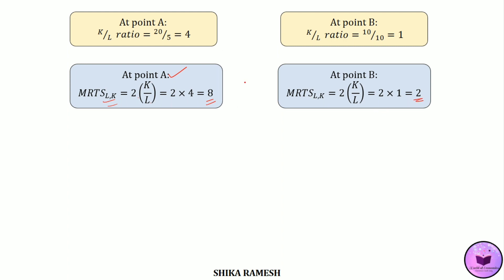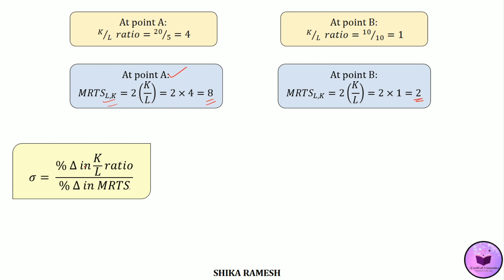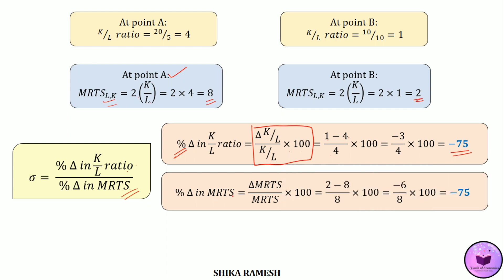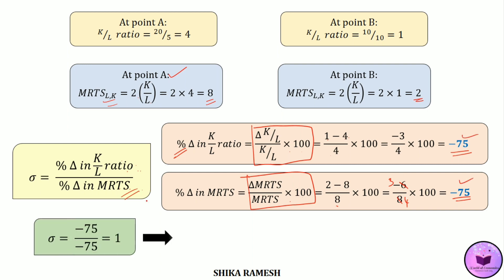Now substituting these values onto the formula of elasticity of substitution, we get the percentage change in the K/L ratio as ΔK/L divided by K/L multiplied by 100. Here ΔK/L is 1 minus 4, and K/L is 4, multiplied by 100, giving minus 3/4 × 100 = −75. Similarly, the percentage change in MRTS is ΔMRTS divided by MRTS multiplied by 100. ΔMRTS is 2 minus 8 and MRTS is 8, so (2−8)/8 × 100 = −6/8 × 100 = −75. So substituting these values, sigma = −75 divided by −75, which equals 1.